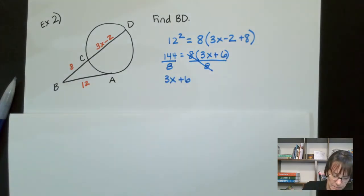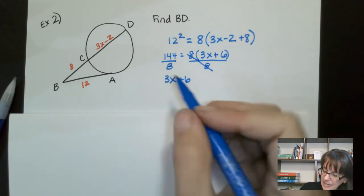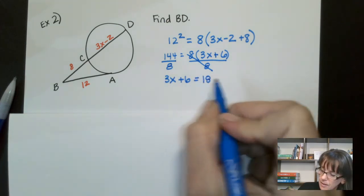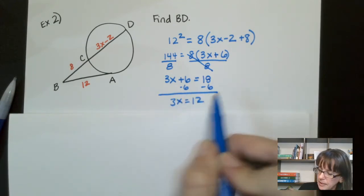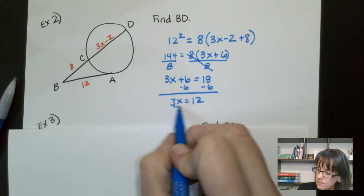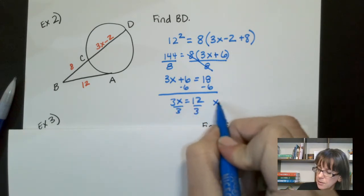So 3X plus 6 is this part right here. And then we have 144 divided by 8 gives me 18 minus 6 from both sides. We get 3X equals 12. Divide both sides by 3 and we get X equals 4.